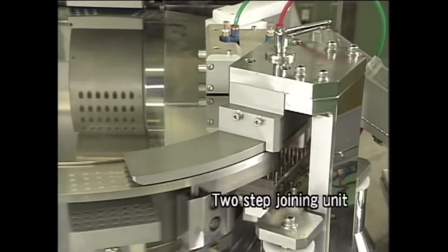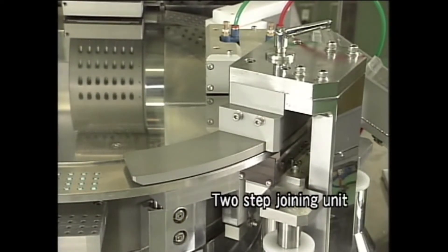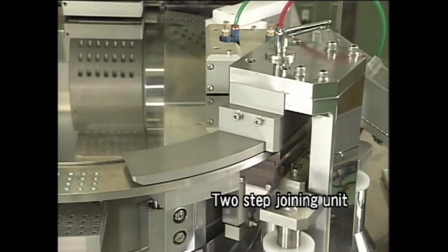After filling, the cap and body of the capsule are joined in a two-stage process by a pusher. This prevents production of defective products that are incorrectly joined.